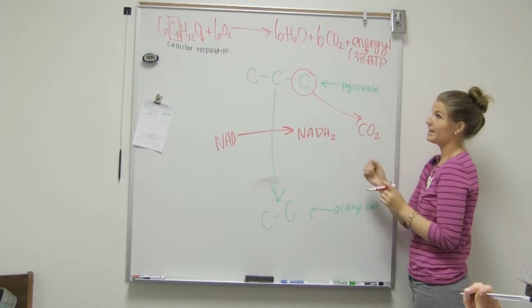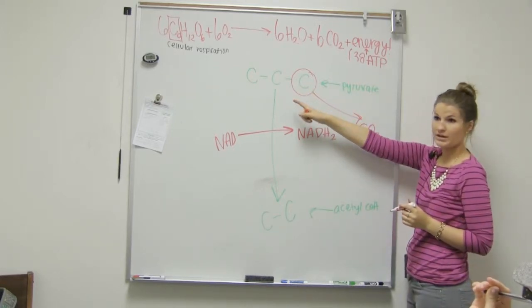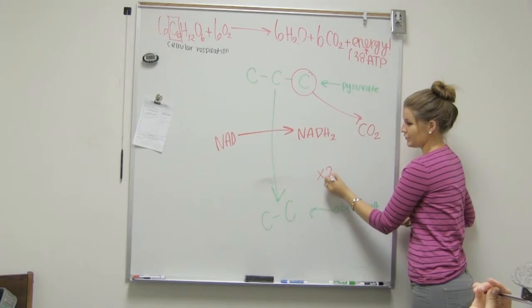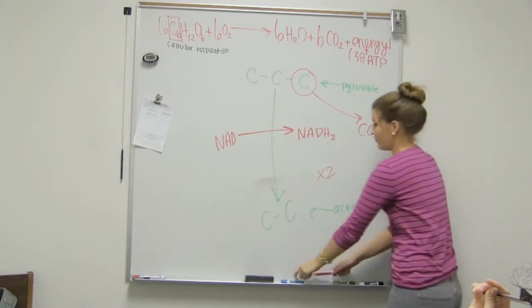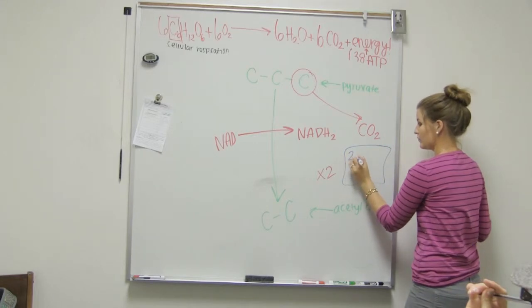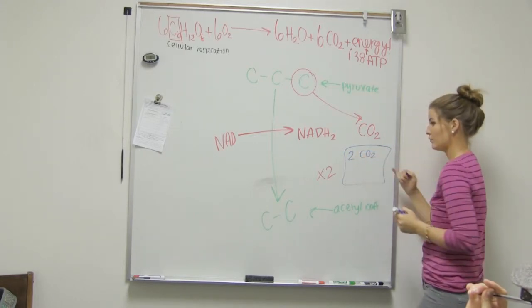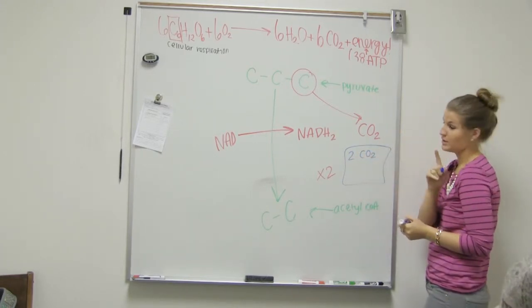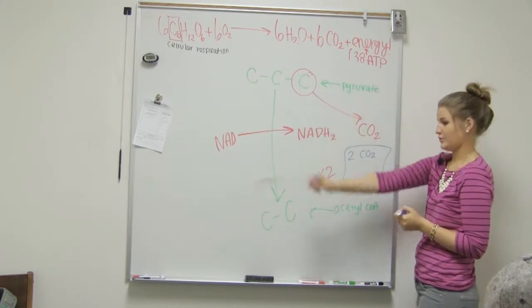But we had two pyruvates, right? Uh-huh. Here we only drew one. So it's times all this by two. So what do we really get during the acetyl-CoA? Two carbon dioxide. You get it. Two CO2s, not just one. Yeah. Because we have two pyruvates and two acetyl-CoAs.